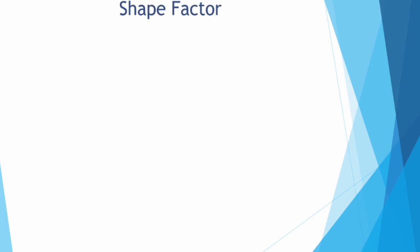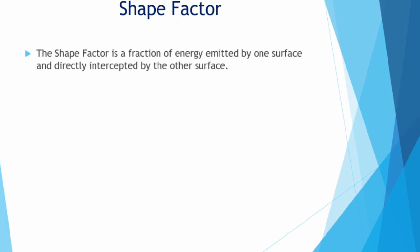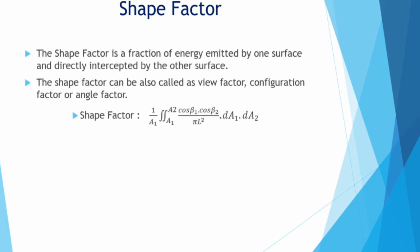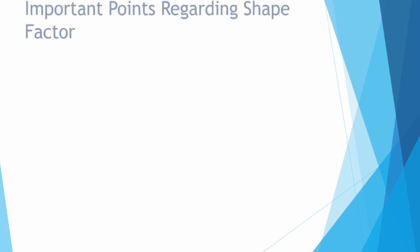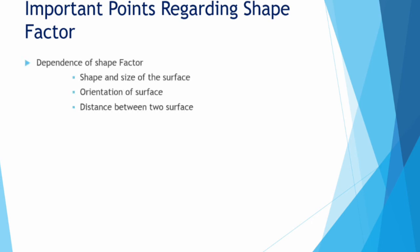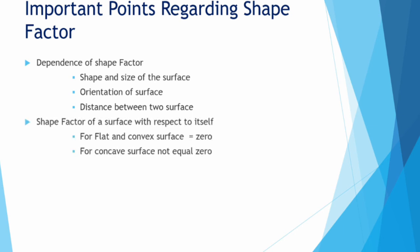What is shape factor? The shape factor is a fraction of energy emitted by one surface and directly intercepted by other surfaces. The shape factor is also known as view factor, configuration factor, or angle factor. Important points regarding shape factor: Shape factor is dependent on the shape, size of the surface, orientation of the surface and distance between two surfaces. For a flat or convex surface, the shape factor is zero. And for concave surface, it's never equal to zero. Shape factor when two surfaces are large and parallel equals one.